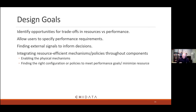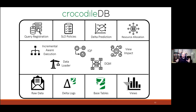CrocodileDB has several high-level goals: thinking about opportunities to trade off resources and performance, allowing users to specify performance requirements, identifying signals to inform decisions, and integrating resource-efficient mechanisms throughout various system components. The talk focuses on query execution — what physical mechanisms are available, what knobs we can tune, and how to achieve the right trade-off between performance and resource consumption.